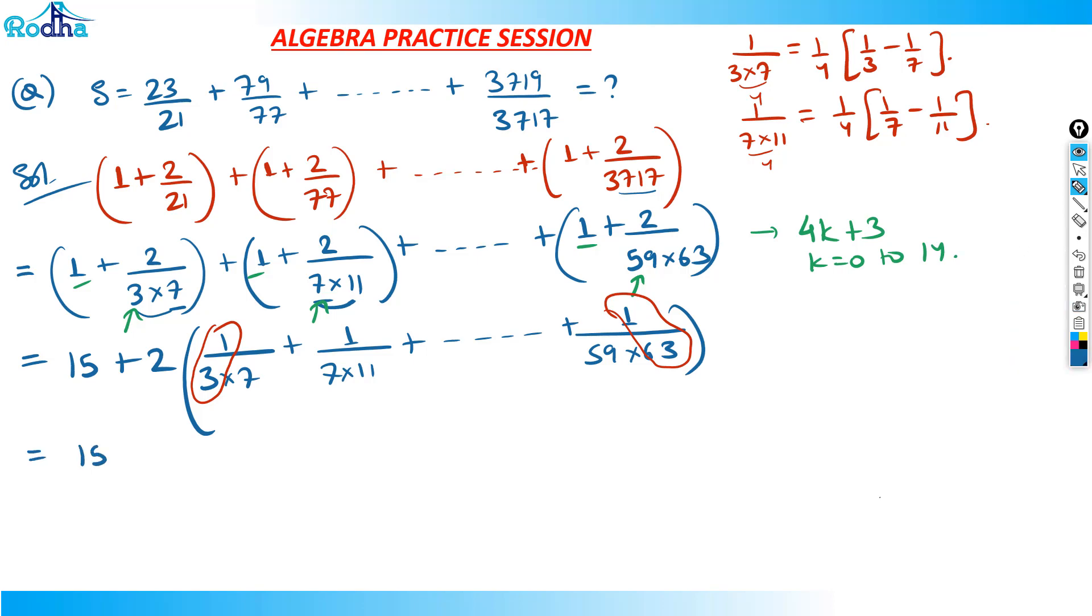So what I'm getting is 15 plus twice this. I need to divide by 4, so take 1/4 outside as common: 1/3 - 1/7 + 1/7 - 1/11, and so on, to 1/59 - 1/63.